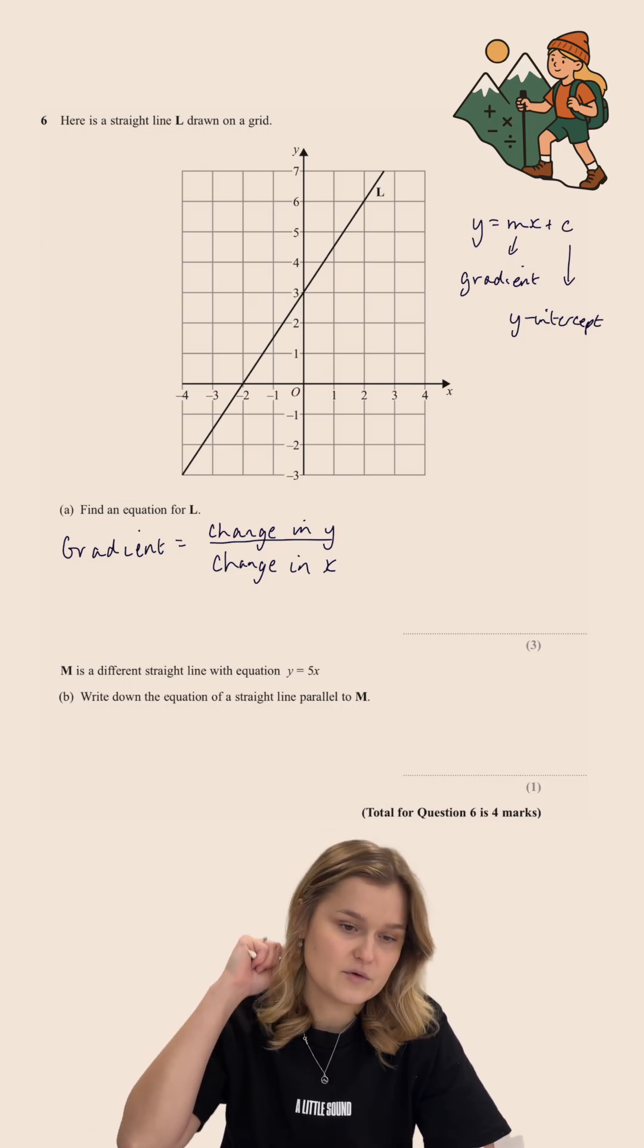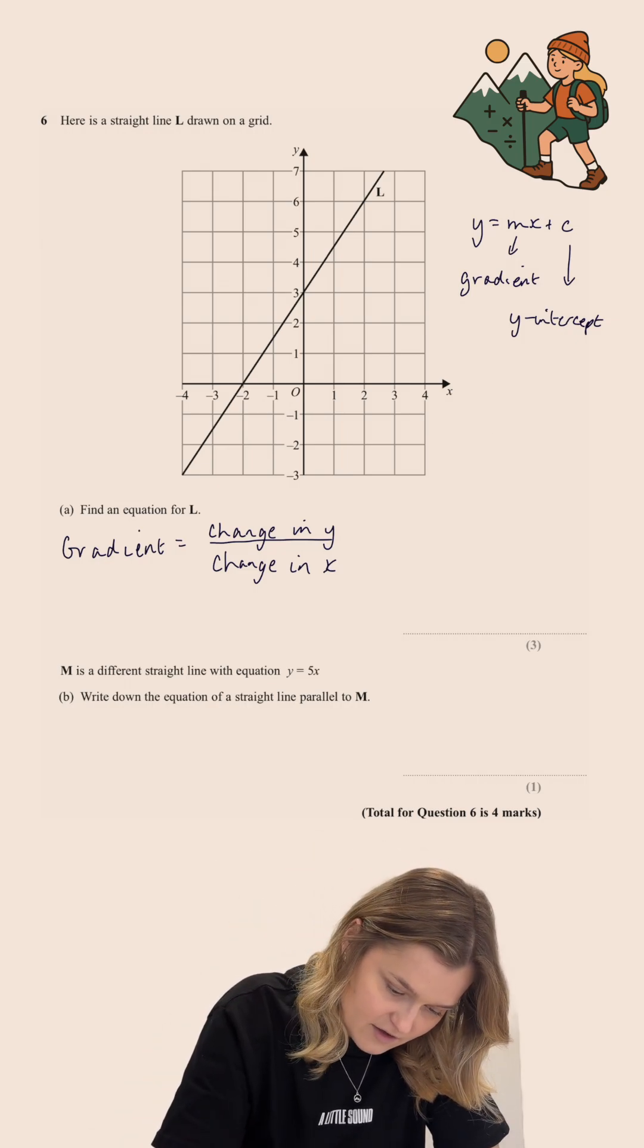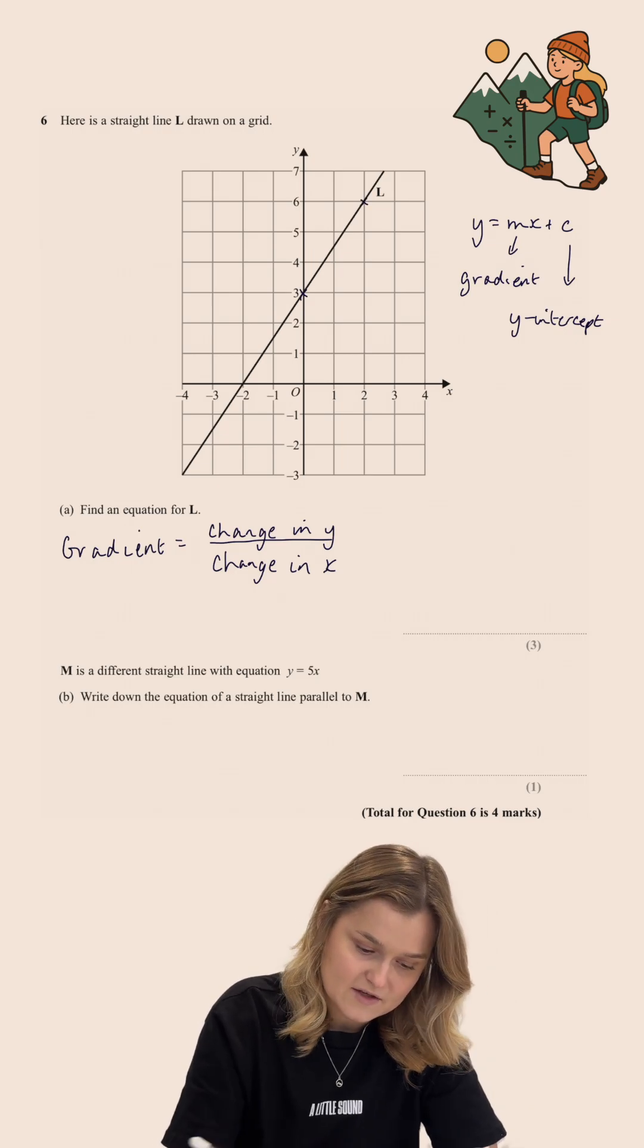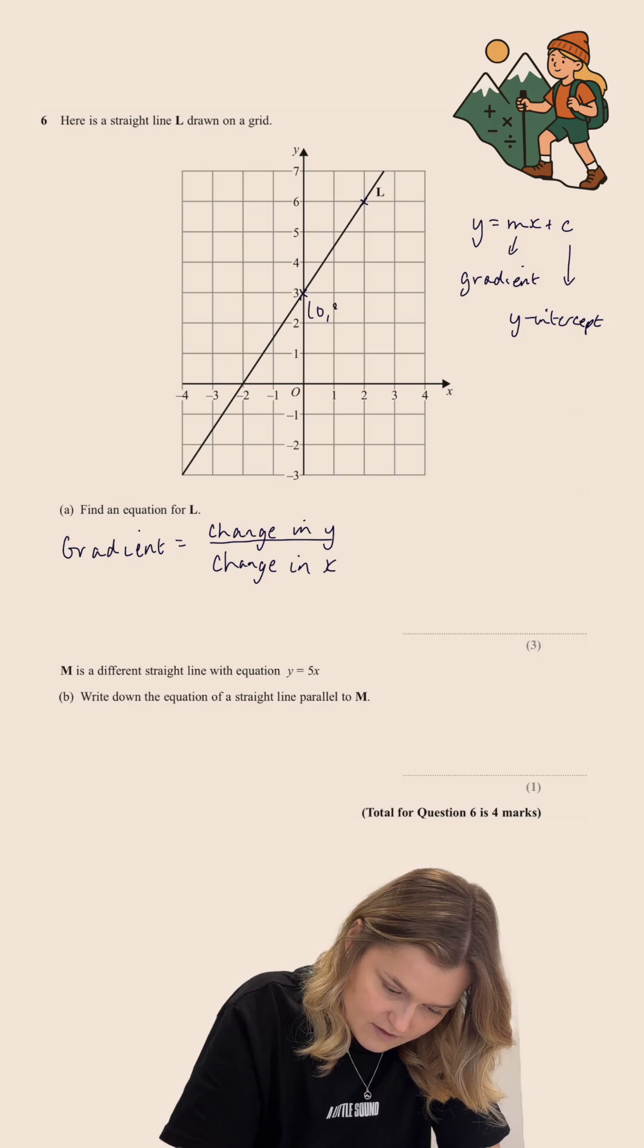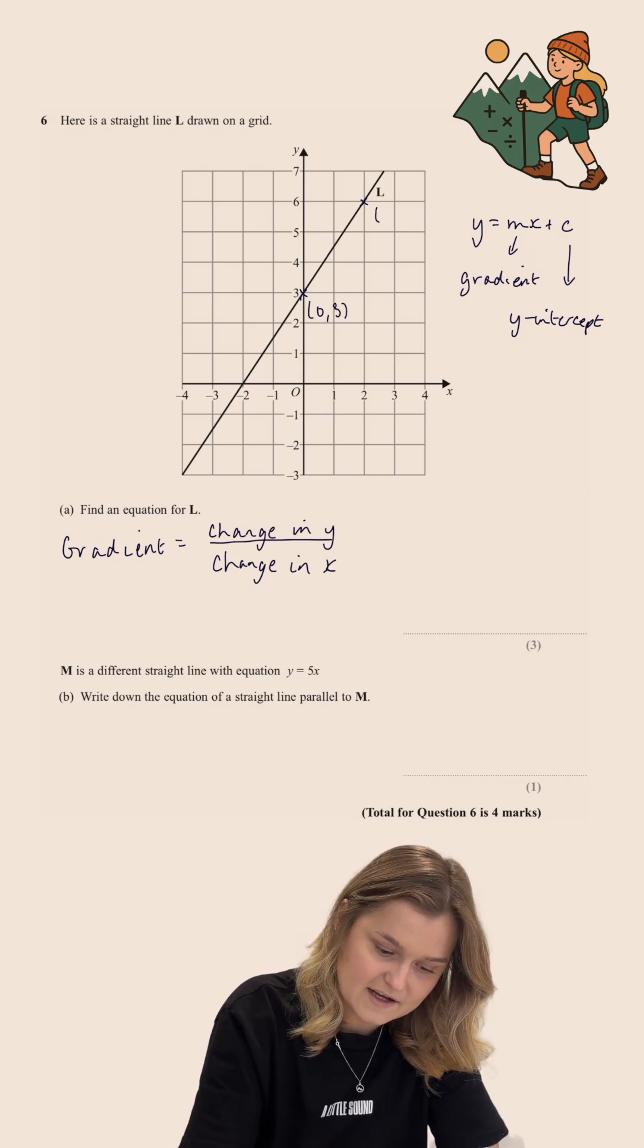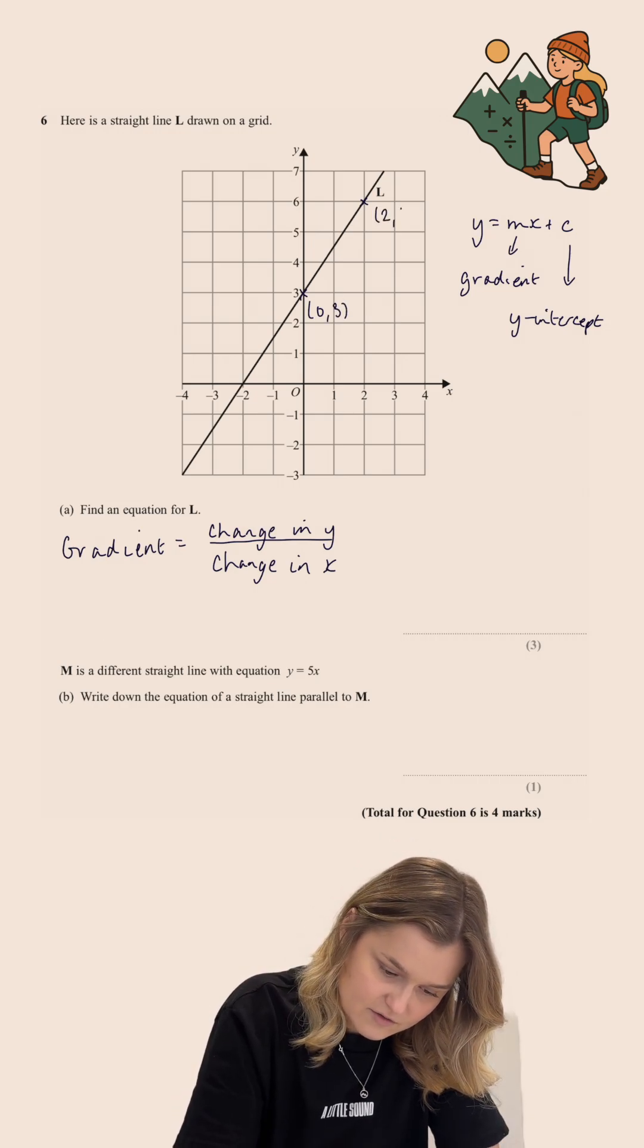So, let's pick two coordinates on the line. I'm going to go for this one here and this one here. So, the coordinates of this first point are 0, 3, and the coordinates of the second point that I've chosen are 2, 6.